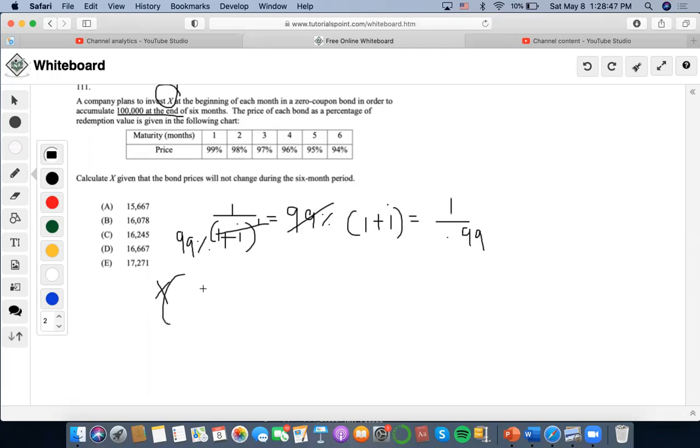And I'm just going to form this equation of 1 over 0.99, plus 1 over 0.98, plus 1 over 0.97, plus 1 over 0.96, plus 1 over 0.95, plus 1 over 0.94. Remember, accumulation of a six months period. And I'm going to say equal to $100,000.